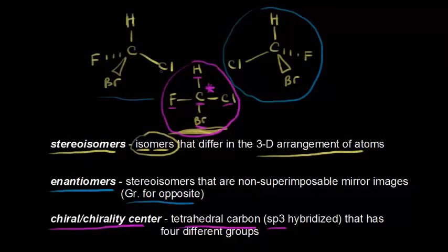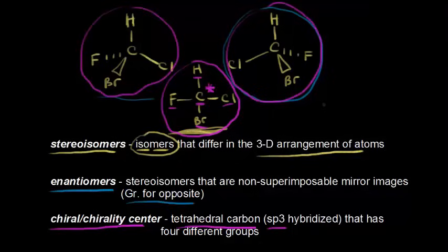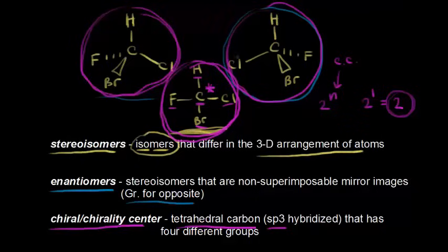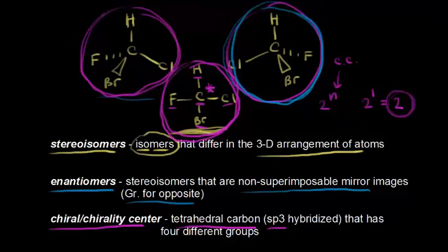One chiral center means two possible stereoisomers. We can write a formula: 2^n, where n is the number of chiral centers. In this case we have one chiral center, so 2^1 = 2, and this number tells us how many stereoisomers we have. These two stereoisomers are non-superimposable mirror images — so they are a special type of stereoisomer that we call enantiomers. We'll talk much more about the number of stereoisomers in a later video.